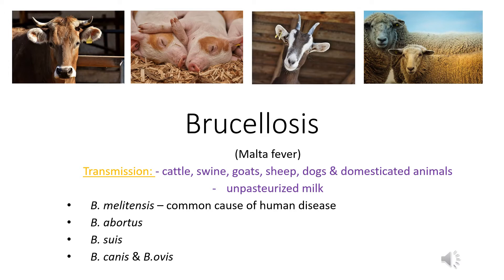Transmission includes animals such as cattle, swine, goats, sheep, dogs, and domesticated animals. The drinking of unpasteurized milk contributes greatly to the transmission into humans. Other ways Brucellosis can be transmitted include laboratory exposure or veterinarians coming into contact with animals who have Brucellosis.